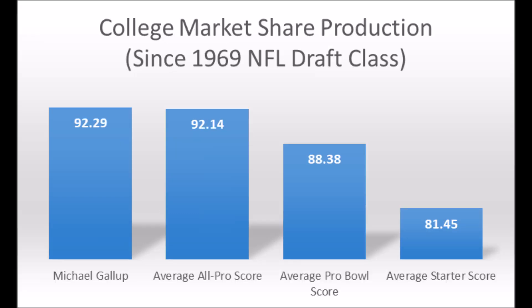When you look at the averages at the position — the average all-pro score, average pro bowl score, and average starter score — Michael Gallup is pretty much within the average of what most all-pro wide receivers typically hit, which is 92.14. The average for pro bowlers is 88.38, and the average for starters is 81.45. So Michael Gallup is well above average and within the range of possibilities of being a potential all-pro player, a potential pro bowler, or even a potential starter.